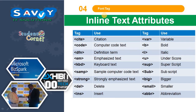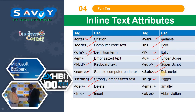The font tag also supports inline text attributes: cite, code, dfn, em, kbd (keyboard text), samp (sample computer text), strong (strongly emphasized, also called bold), del (delete text), ins (insert), var (variable), b (bold), i (italic), u (underscore), sup (superscript), sub (subscript), big (bigger text), small (smaller text), and abbr (abbreviation).